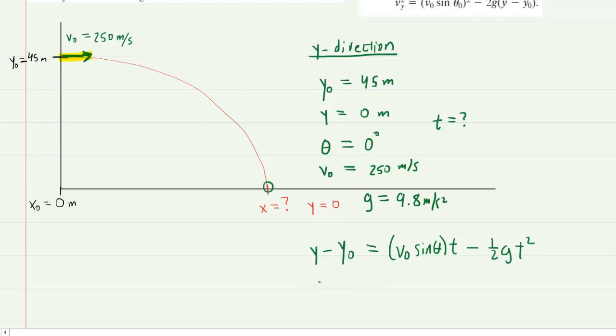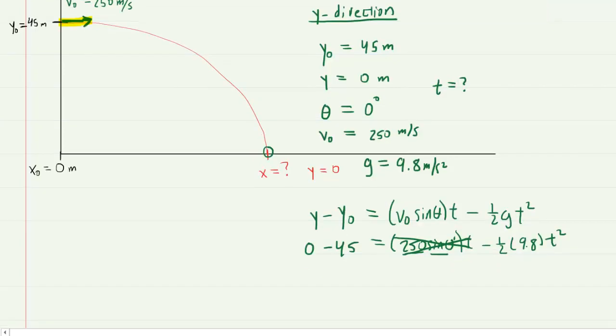We'll plug in the known information that we've already listed. We've omitted the units for clarity's sake. Notice that the sine of 0 is 0, so you're going to end up with 250 times 0, which is 0, and that multiplied by time is still 0. So this entire term disappears.